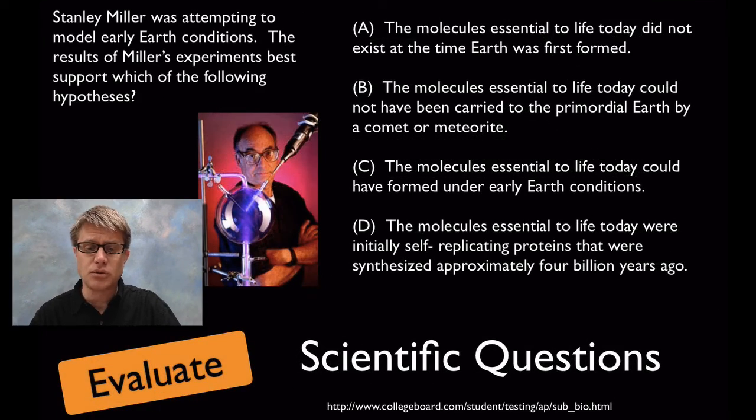And finally you have to be able to evaluate scientific questions. And so this is Stanley Miller, Miller-Urey's famous experiment. They were attempting to model early earth conditions. Remember they put all of the gases and added some energy that kind of simulated what early life on our planet was. And we could make some of the building blocks of life. And so here in order for them to test your ability to evaluate scientific questions they're saying which of these are the questions or was the question that Miller was trying to answer. So you could pause and take a stab at this one. The right answer is C. He was trying to show that the molecules essential to life today could have formed under early earth conditions. And so this is how they're going to get at your ability to ask questions on the AP exam.